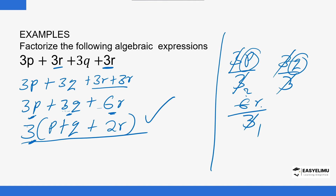That is the simplest factorized form of that algebraic expression. You can see we have reintroduced the brackets. Initially we were talking about removing the brackets, where the number outside multiplies all the terms inside — and if you do that, you still get back to where you started.